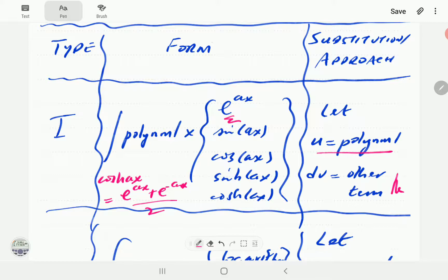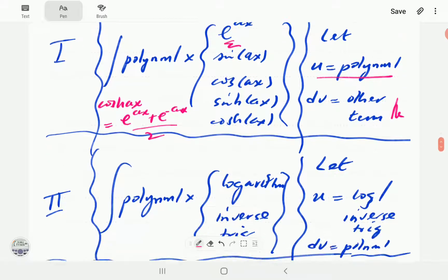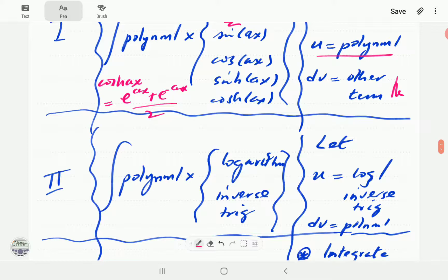Type 2 are integrals that involve a polynomial times a logarithmic term or a polynomial times an inverse trigonometric function term. This time we'll let u be either the log term or the inverse trigonometric term. The polynomial is going to be our dv. Again we'll do examples on this.